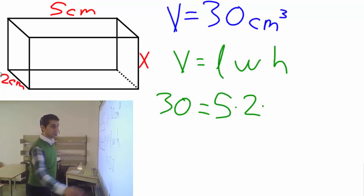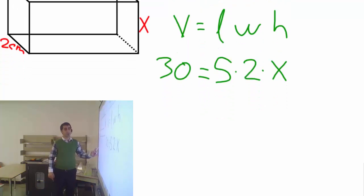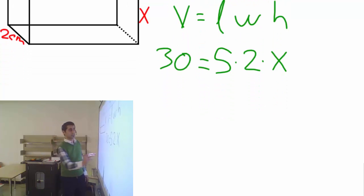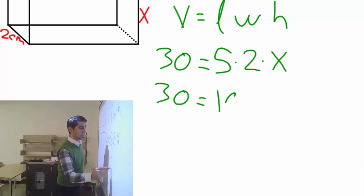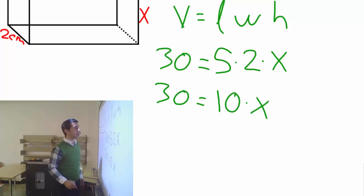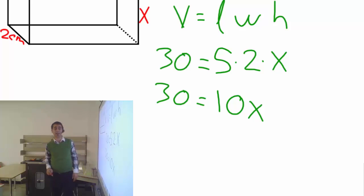H is not a number, it's a letter, so let's write down x. Now let's organize the right side. This is still 30 equals 5 times 2 is 10. You can write times x or simply write 10x. 10x means multiplication anyway.